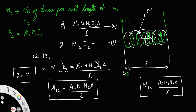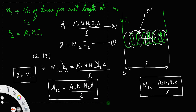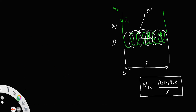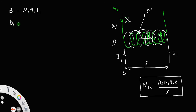Now let us find the mutual inductance of the second coil with respect to the first coil. We now pass a current I1 through the first coil. The magnetic field produced by the first coil is B1 = μ₀N₁I1, where N1 is the number of turns per unit length of the solenoid. We can write B1 = μ₀(N₁/L)I₁.